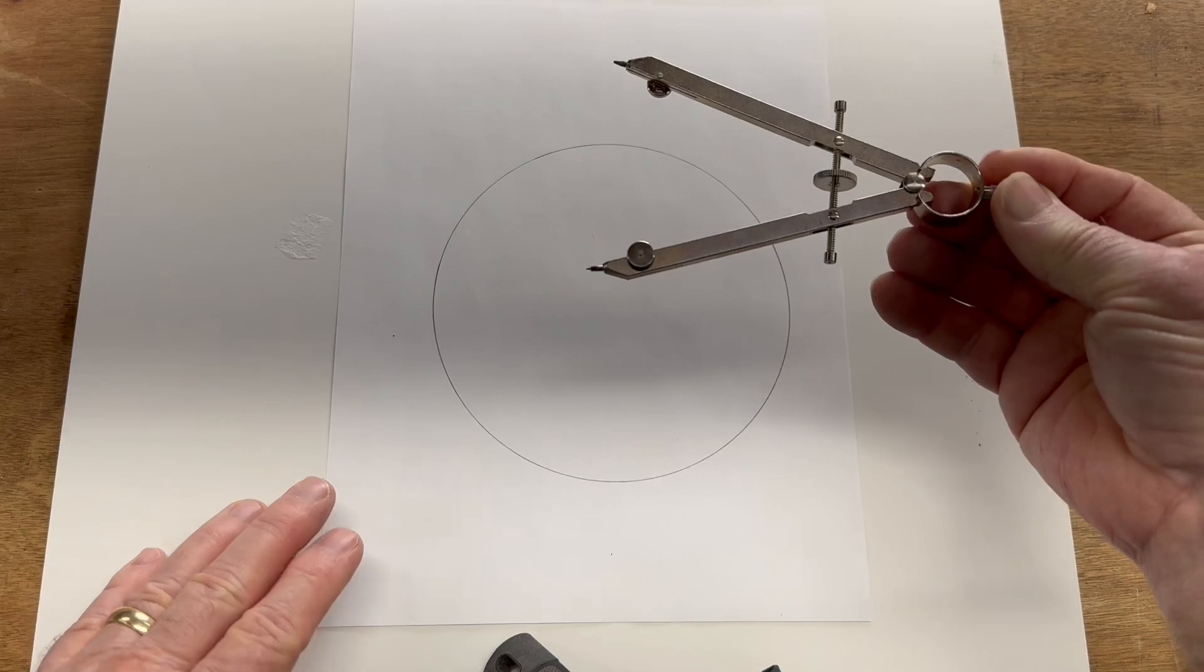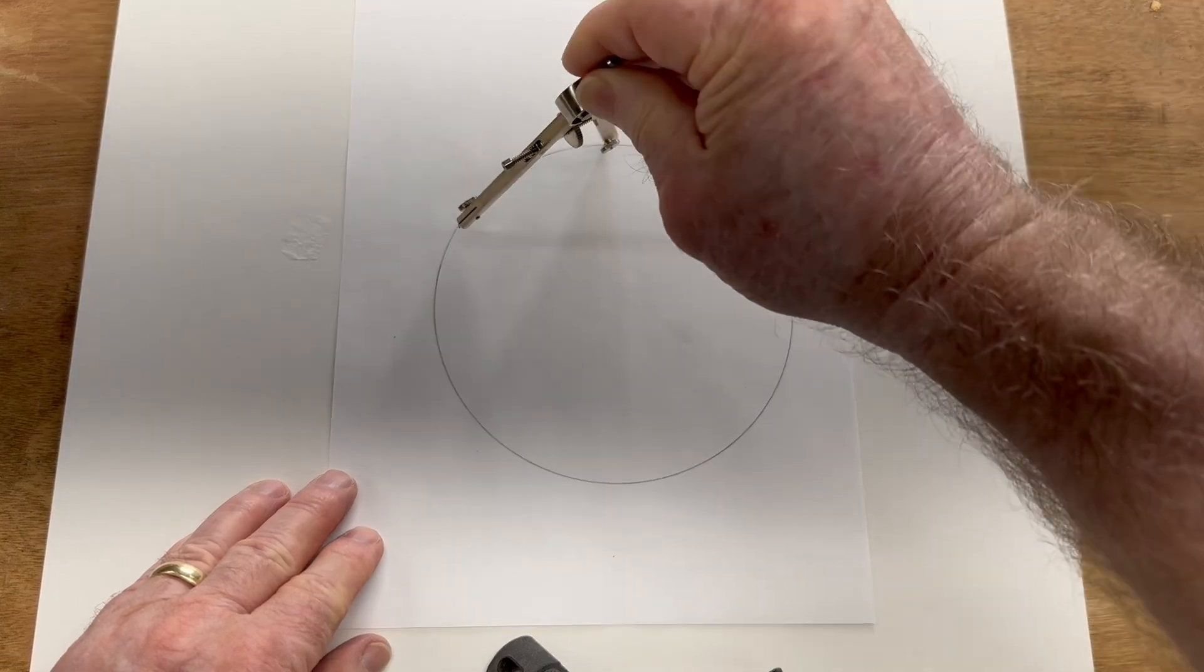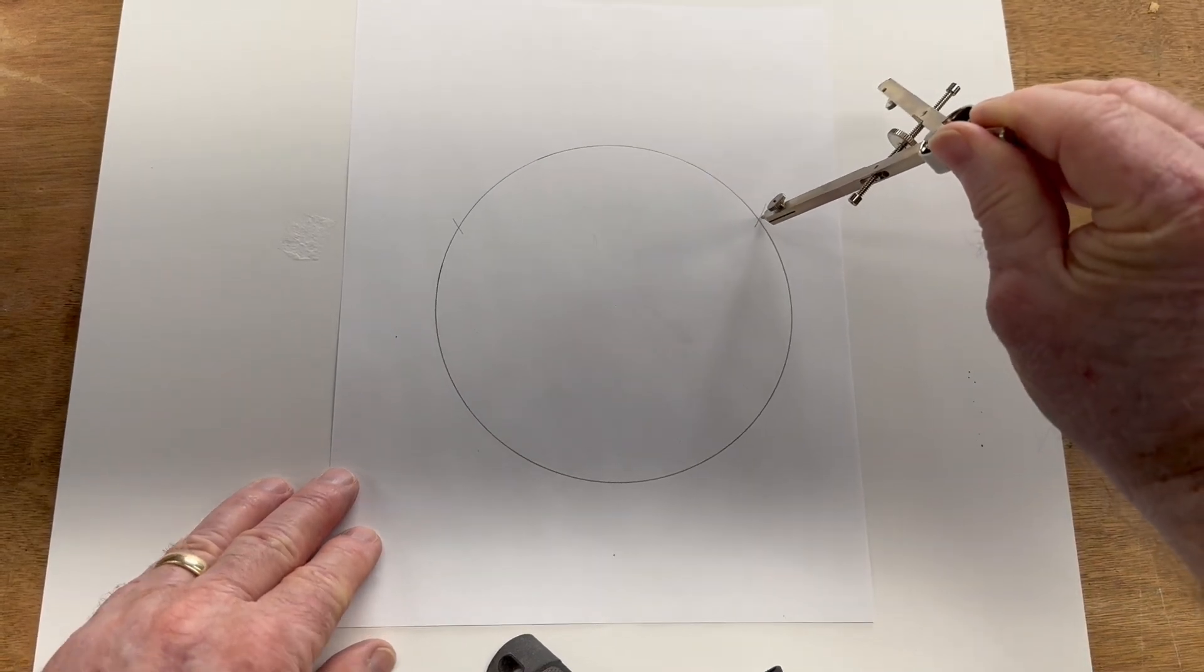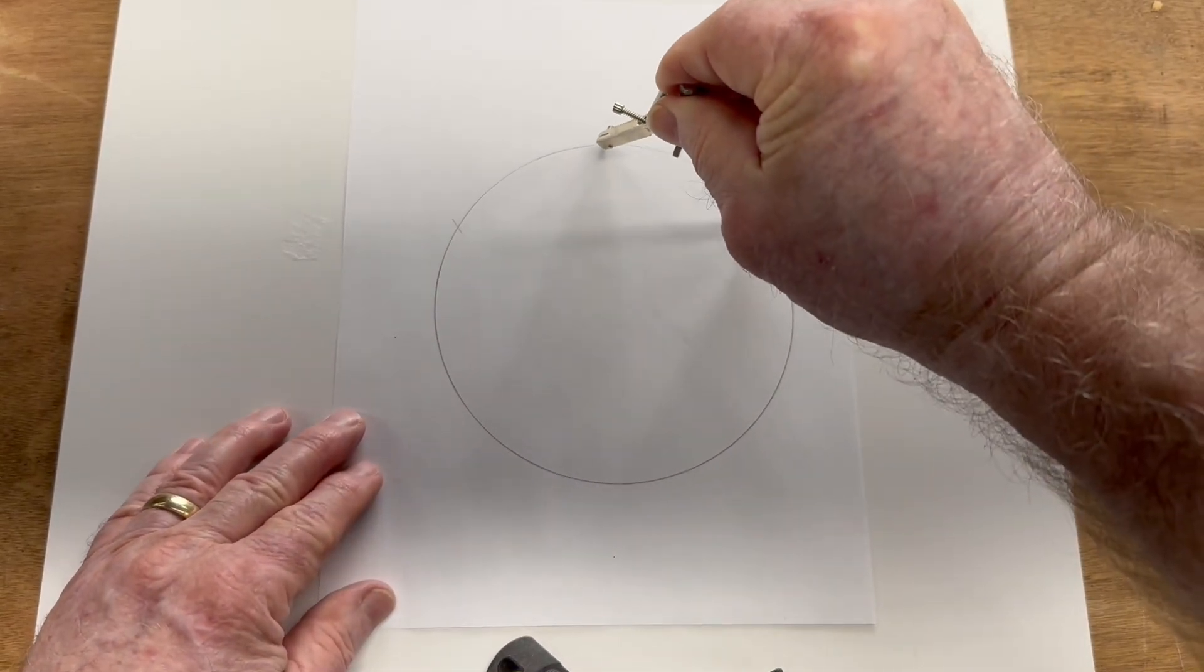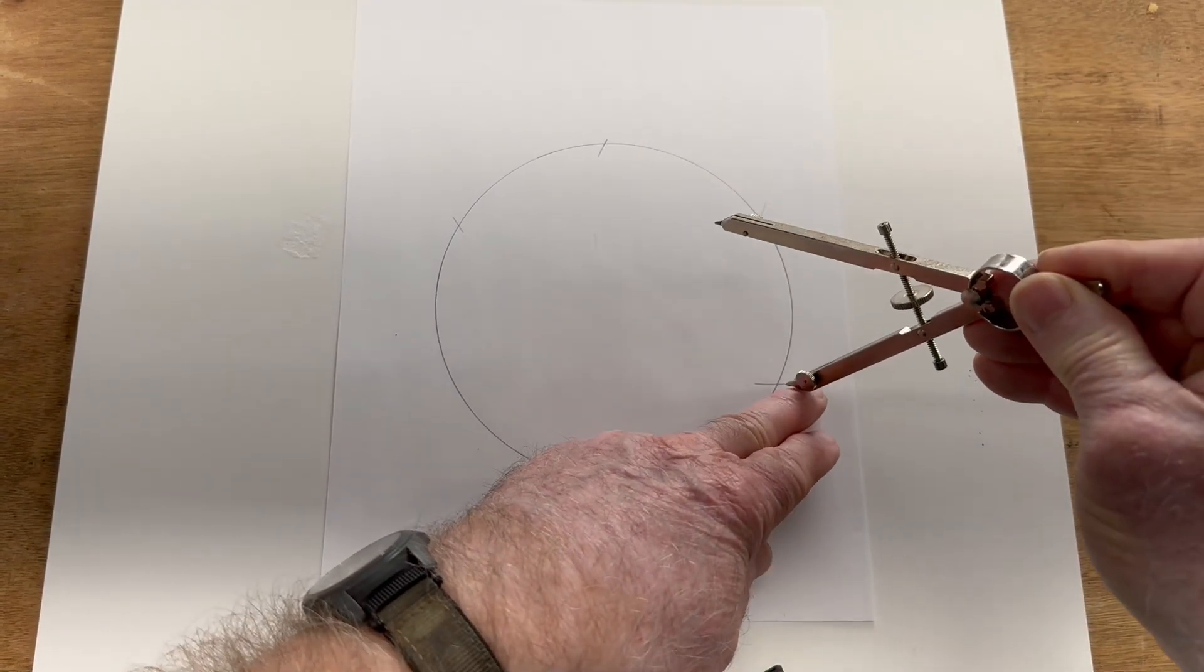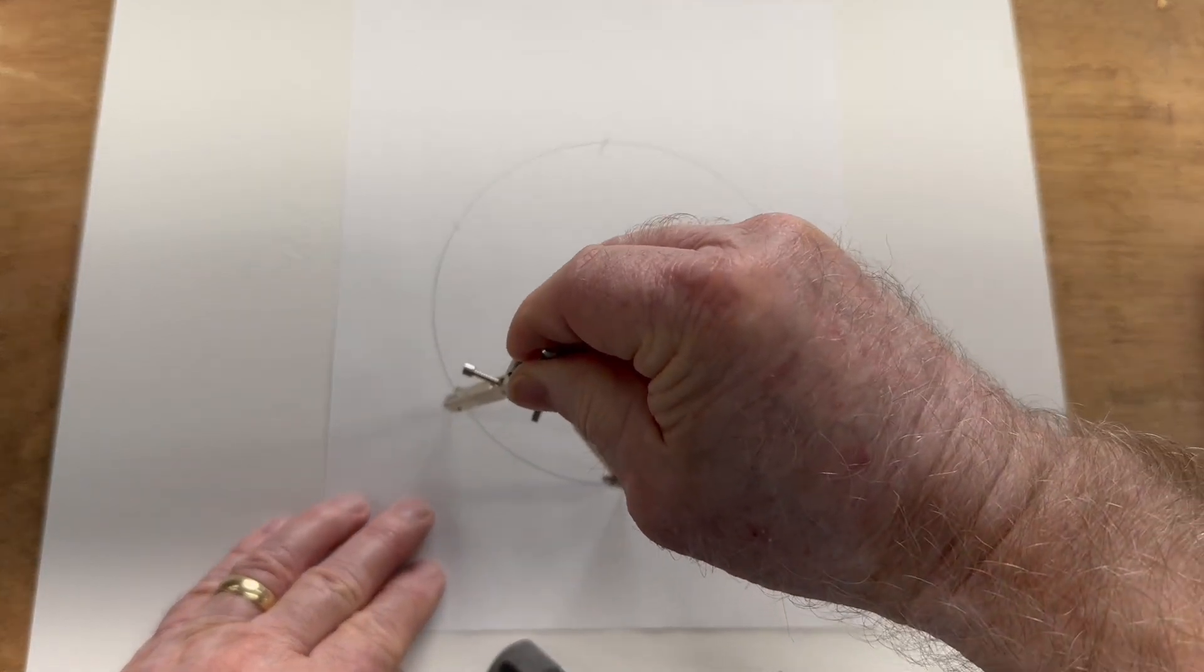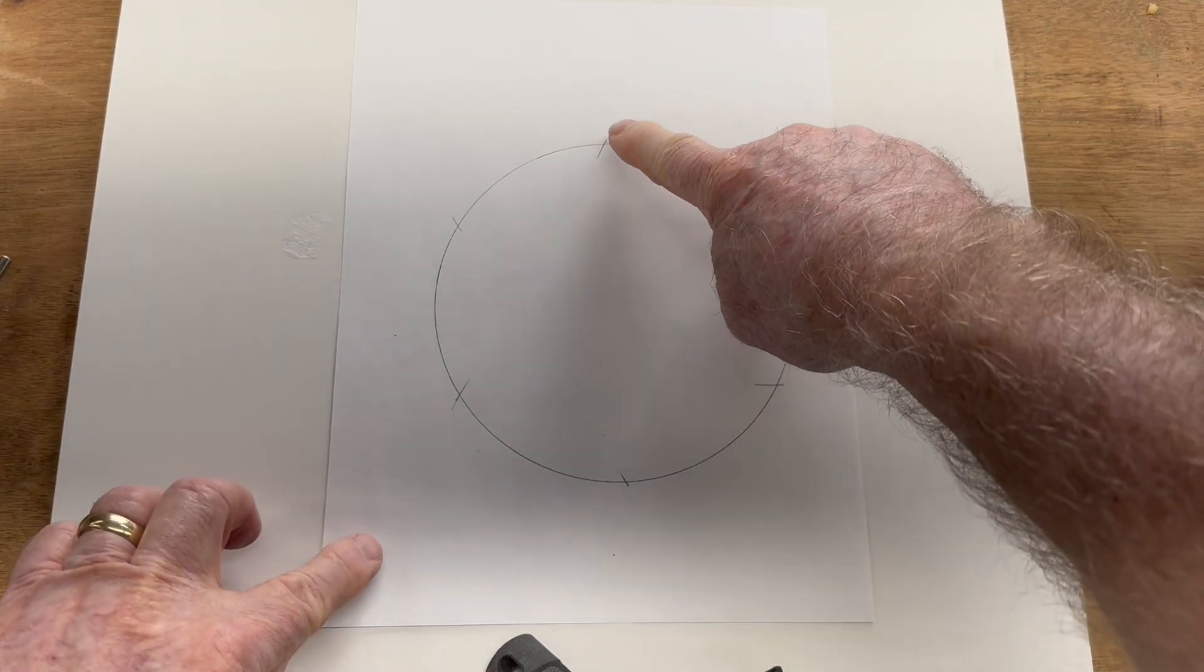That gives me my circle, and without changing anything, I'm going to start right up here at the top and make a little reference mark on each side. Then I'm going to go right over to this point and draw a line here and here. I'll do the same thing. That gives me actually six different points.